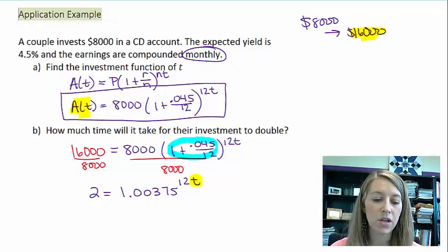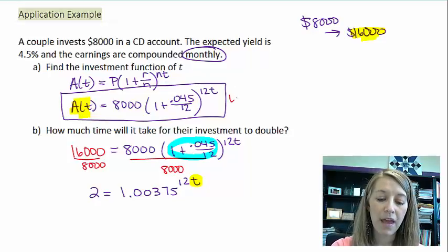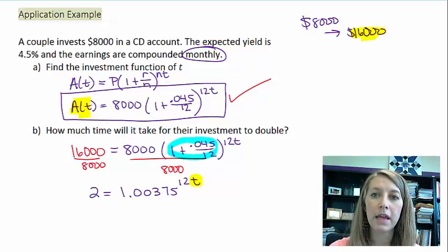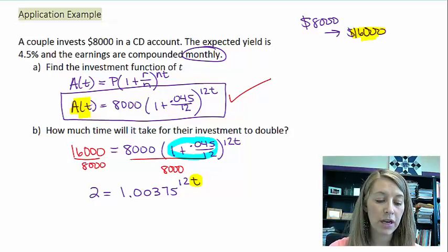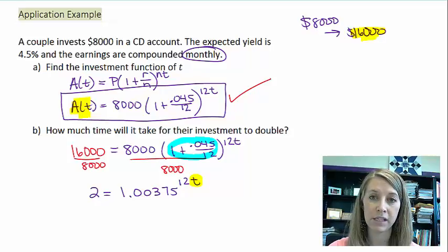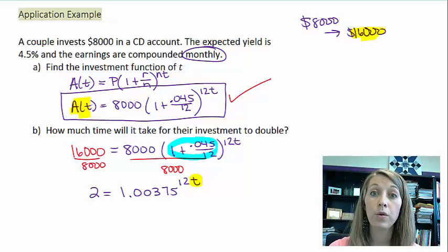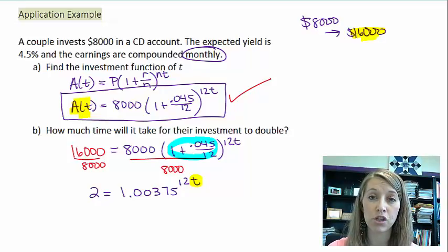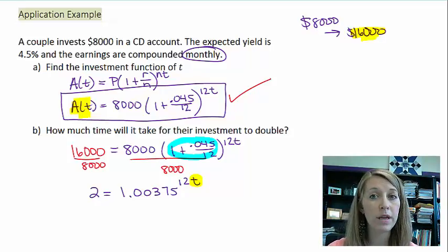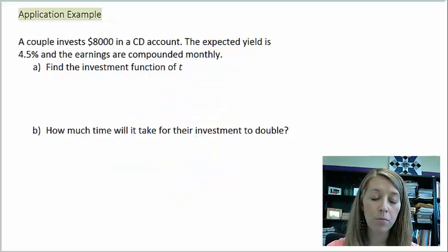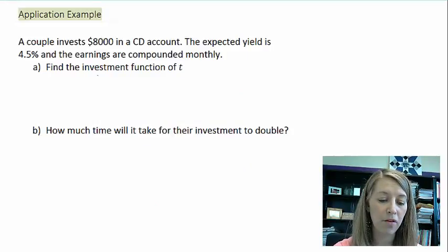A couple invests $8,000 in a bank account, compounded monthly at 4.5%. We came up with a formula for how much money we can earn dependent upon time. Then we asked the question, how much time will it take for our investment to double? We were stuck at that because we could not figure out how to solve this application without solving equations. Now we can actually go ahead and finish this.